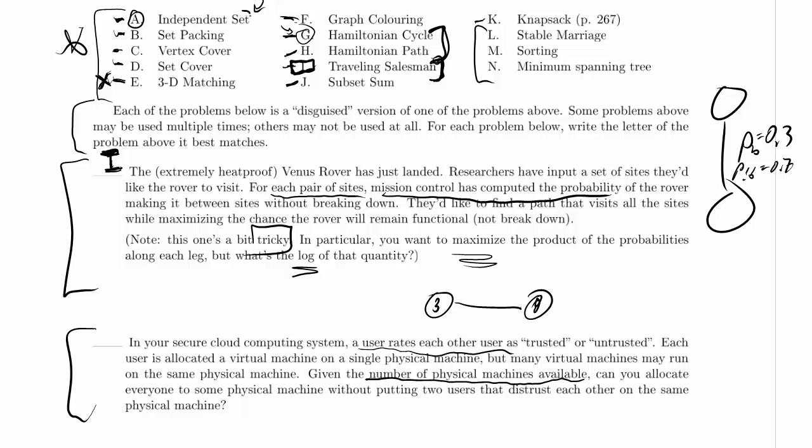So that's sort of the packing problems in general. But independent set immediately sounds really promising, because in independent set, we want to avoid picking two nodes that have an edge between them. That would be like two nodes that distrust each other.